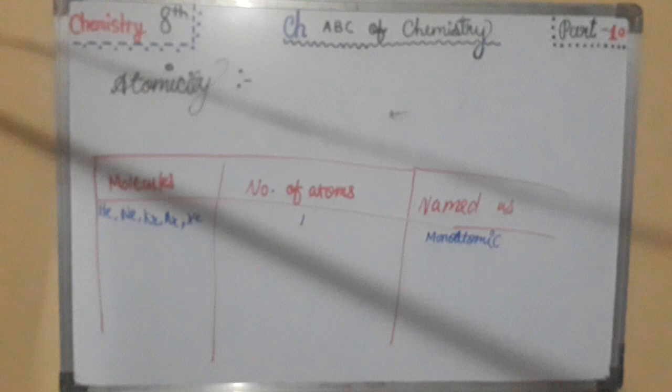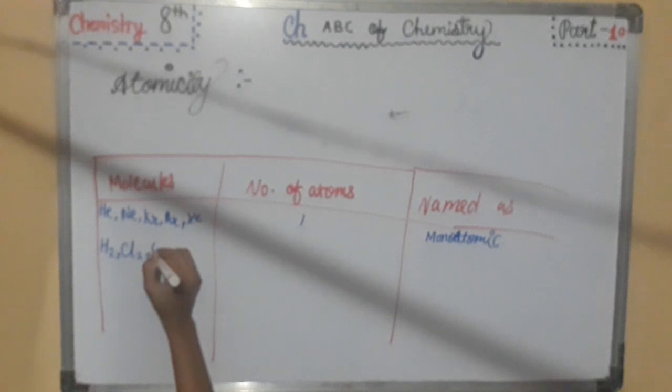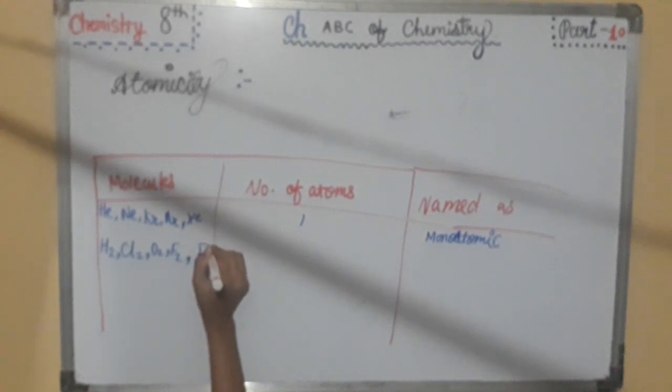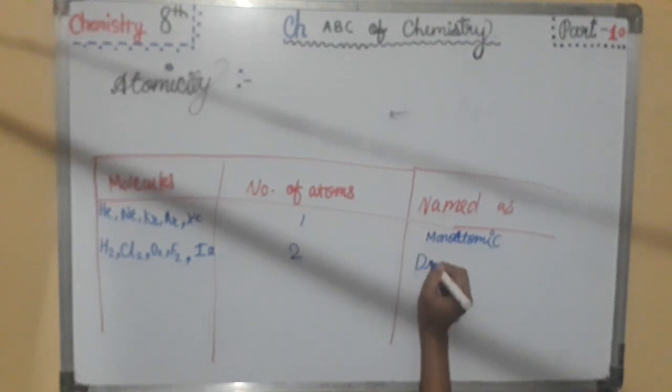After that, H2, Cl2, O2, F2, I2. Number of atoms is 2. And named as diatomic.